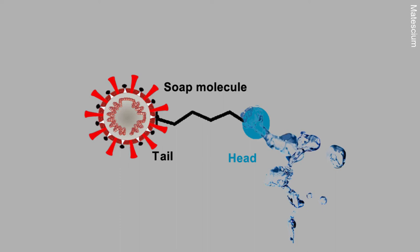This soap tail is one kind of trap for coronavirus. Remember, this is the main mechanism and power of soap to destroy the viruses.